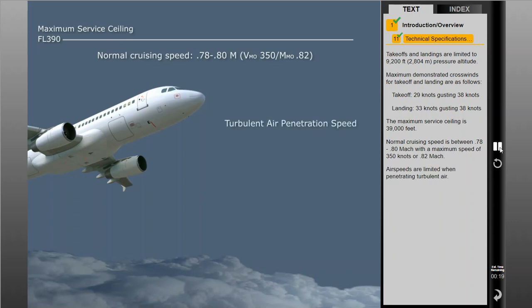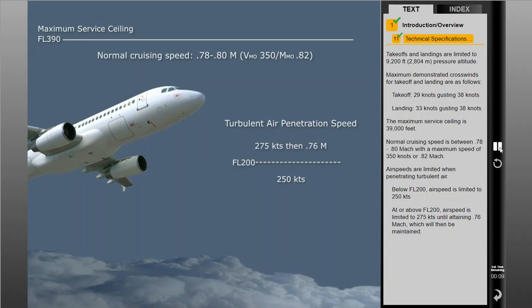Air speeds are limited when penetrating turbulent air. Below flight level 200, air speed is limited to 250 knots. At or above flight level 200, air speed is limited to 275 knots until attaining 0.76 Mach, which will then be maintained.